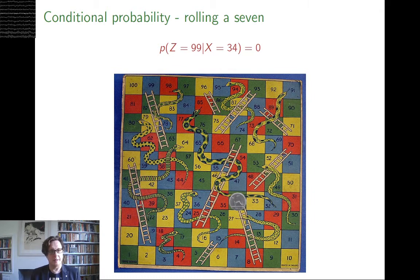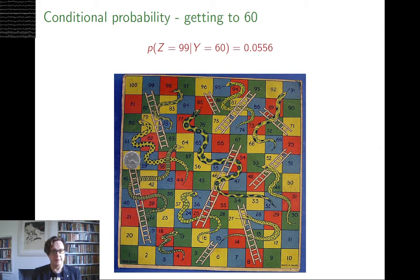So the distribution of Z depends on the value of X. X and Z, as I said, are not independent.